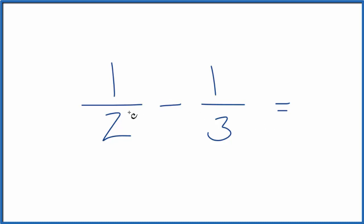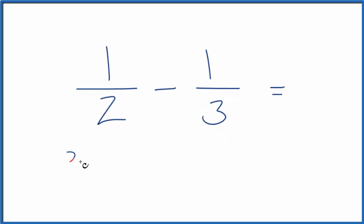To do that, we need to get a common denominator. That's the number on the bottom. If I write the multiples of two: two, four, six, and then three: three, six, nine—six right here is common between two and three.